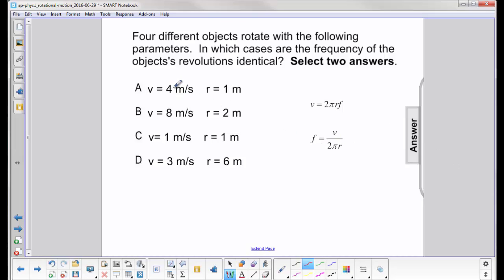We'll try and do this in our head here. So for case A, velocity is 4, r is 1, 4 over 2π is 2 over π.